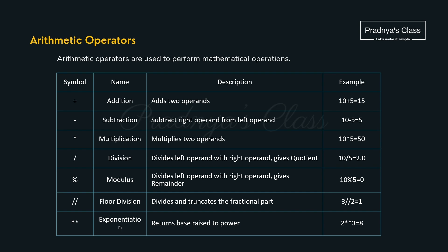The first is arithmetic operators: plus, minus, and multiplication are easy to understand. The division operator gives the quotient but returns the answer as a float. If you want the quotient as an integer, use the floor division operator. If any operand is float, you will get the answer as float. Apart from that, we have the modulus operator which gives the remainder, and the exponentiation operator used to calculate the power of a number.